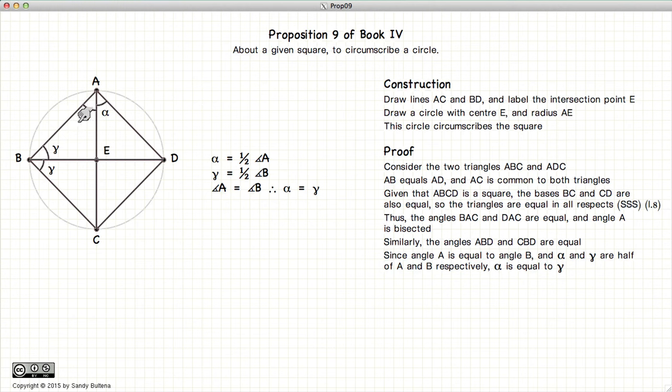In other words alpha and gamma are equal. So let's look at this triangle ABE. Alpha and gamma are equal which means it's an isosceles triangle and as an isosceles triangle BE is equal to AE. In other words these two lines are equal.